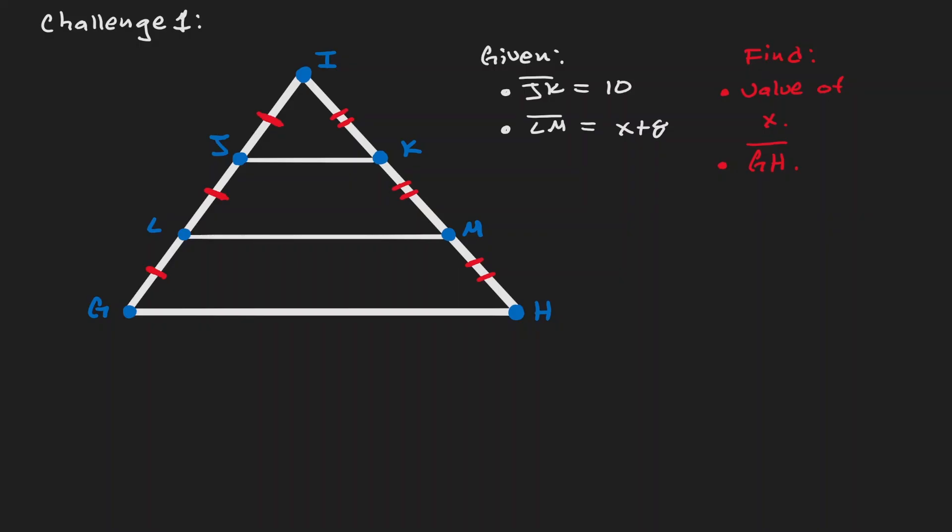JI has one line, JK has one line, LG is one line, and the same can be said about the right-hand side. IK congruent to KM congruent to MH. So let's consider that. Let's look at the givens. We know that JK has a length of 10. Let's put it on the diagram. And LM has an expression of x plus 8.